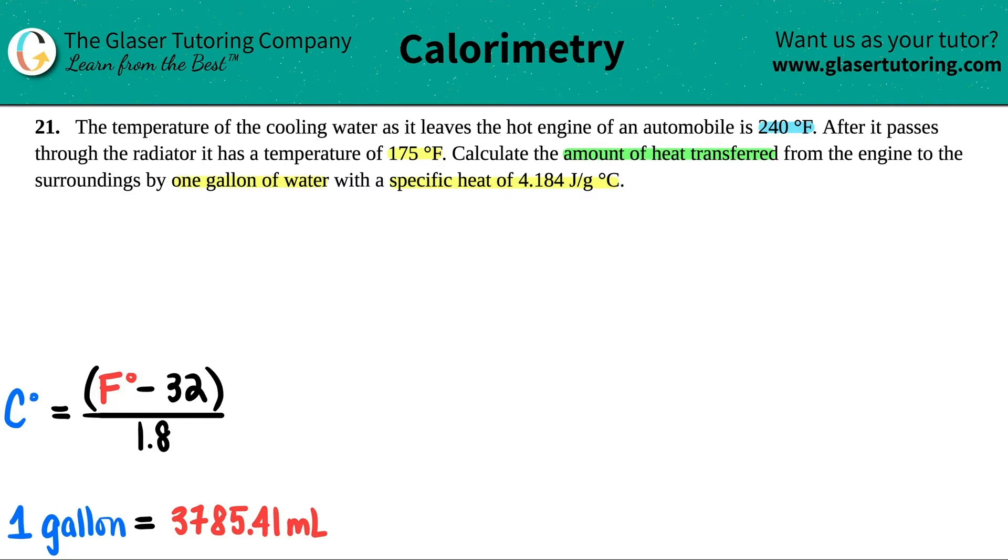So they gave us a specific heat, different temperatures, and they're asking for the amount of heat transferred. So we're definitely looking at this formula: Q equals ms delta T. Now, the only compound that they told us was water, so we're not mixing water with a metal or anything like that. So we go back to the standard Q equals ms delta T formula.